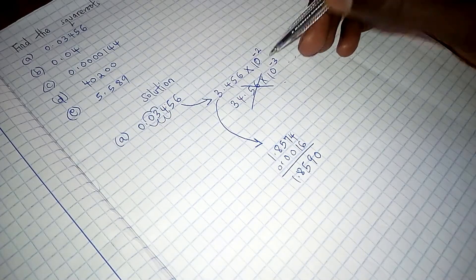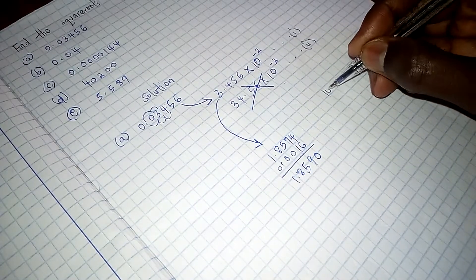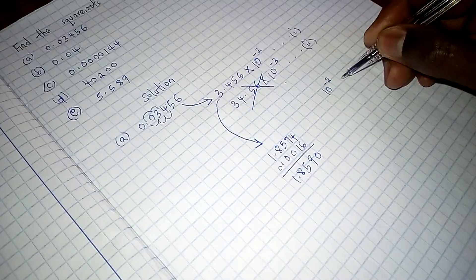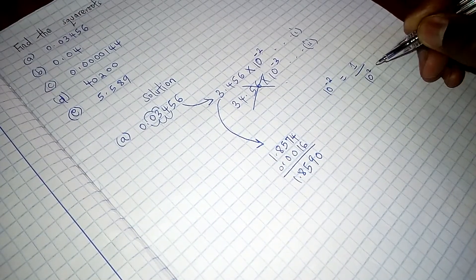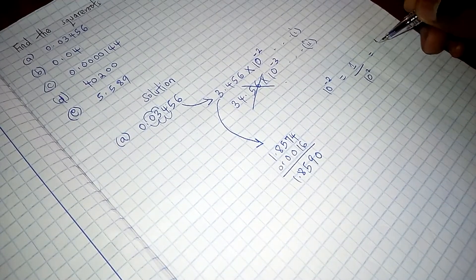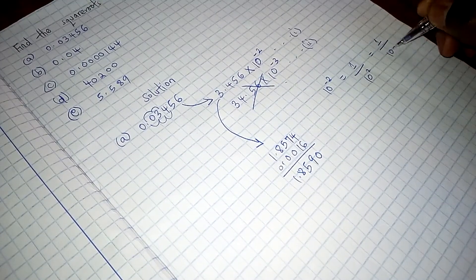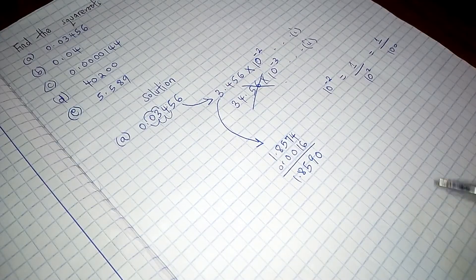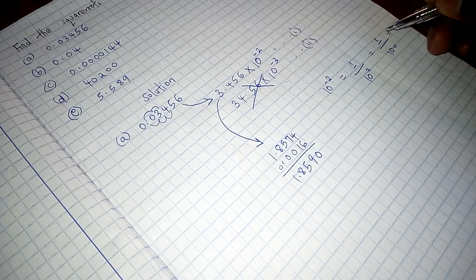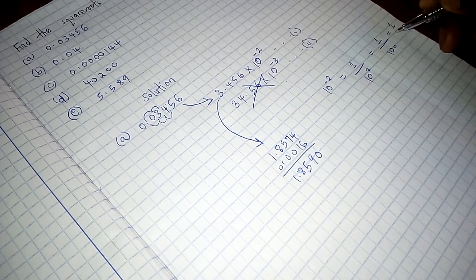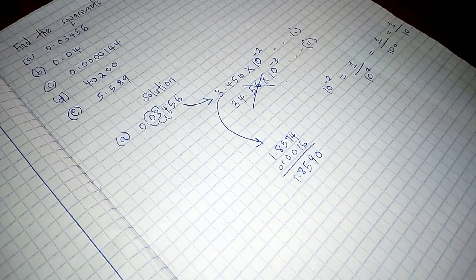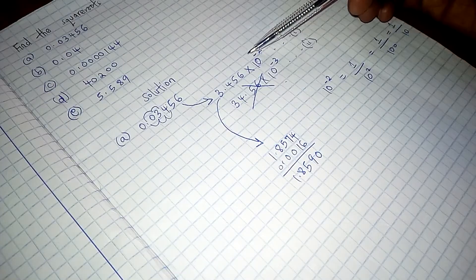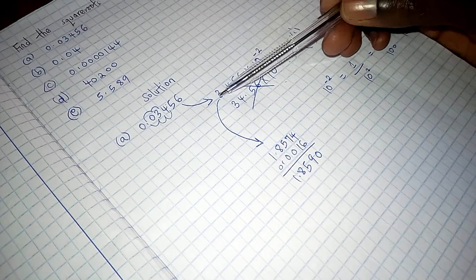How about the square root of 10 raised to power negative 2? So 10 raised to power negative 2 can as well be written as 1 over 10 squared. This can further be written as 1 over 100. So we can easily get the square root of this number. The square root of 1 is 1. The square root of 100 is 10. So we have gotten the square root of this.